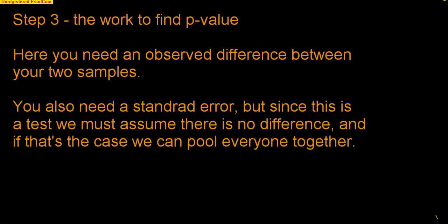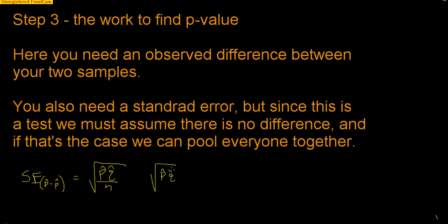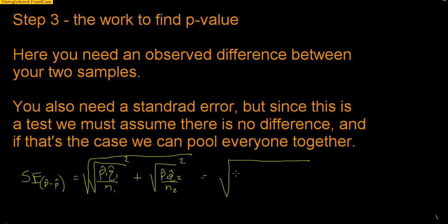We need to find a standard error. To find the standard error for the difference between two samples, you take the square root of p-hat-1 times q-hat-1 divided by n1, plus p-hat-2 times q-hat-2 divided by n2. We can't add standard deviations directly, so we square both, add the variances together, and then take the giant square root of the combined variance.